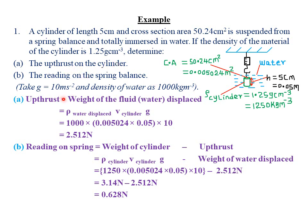From our previous lesson, from Archimedes' principle, upthrust must be equal to the weight of the fluid that is displaced by a body immersed in that particular fluid. In this case, we are immersing our cylinder in water, so the upthrust force will be equal to the weight of the water displaced. From Archimedes' principle, upthrust equals weight of the fluid displaced.